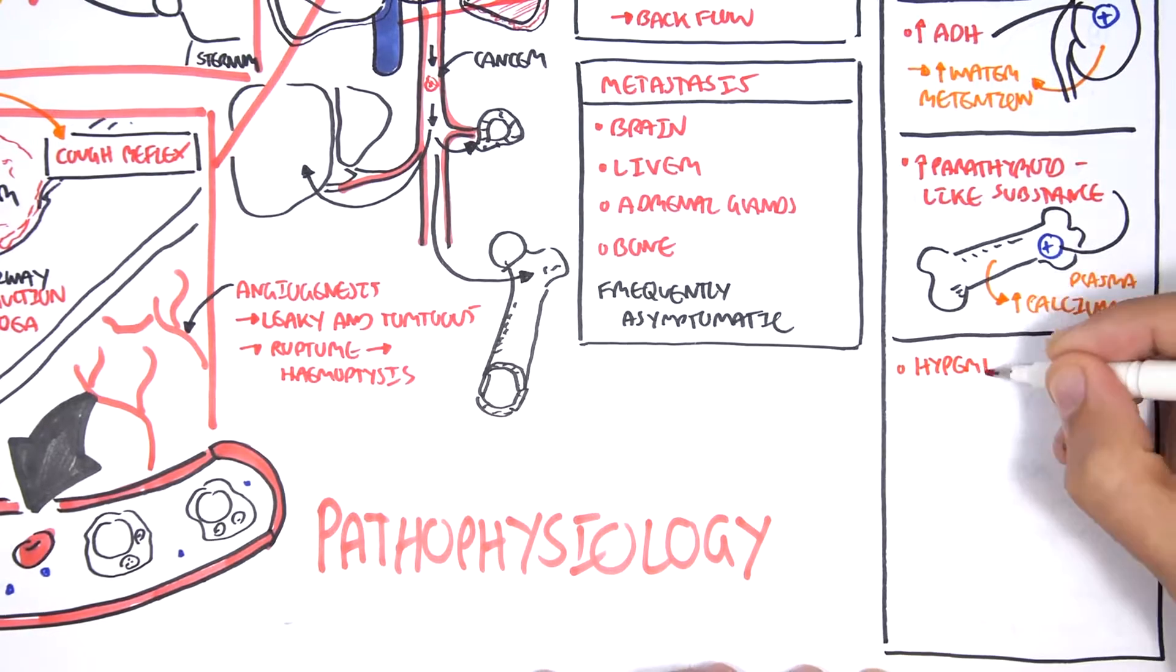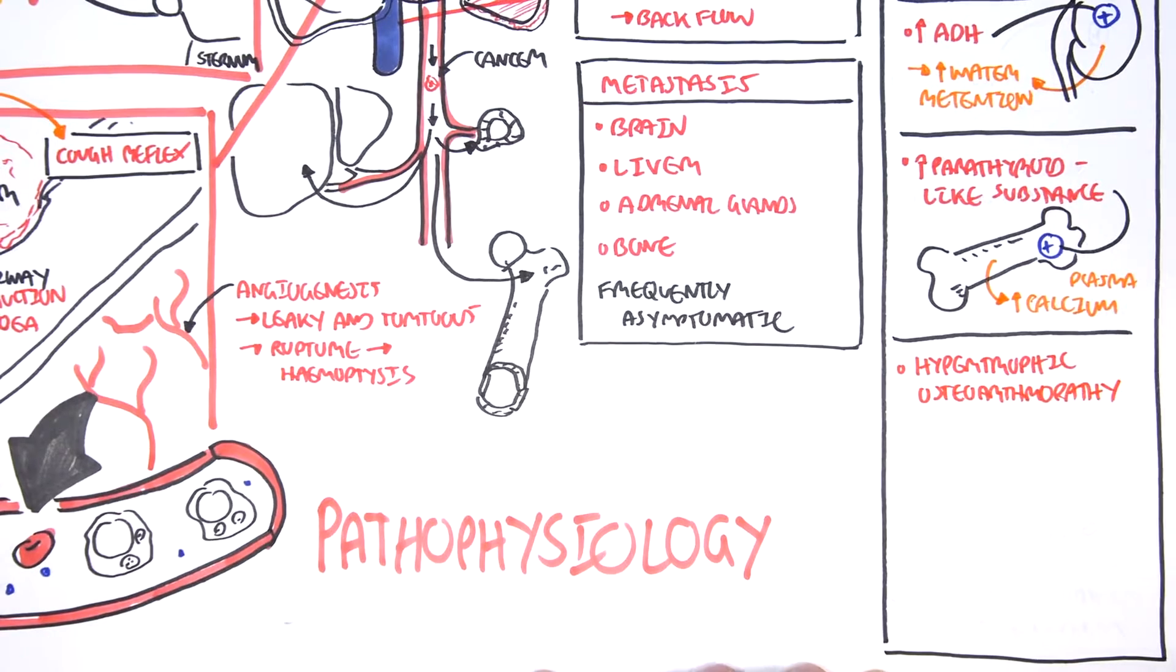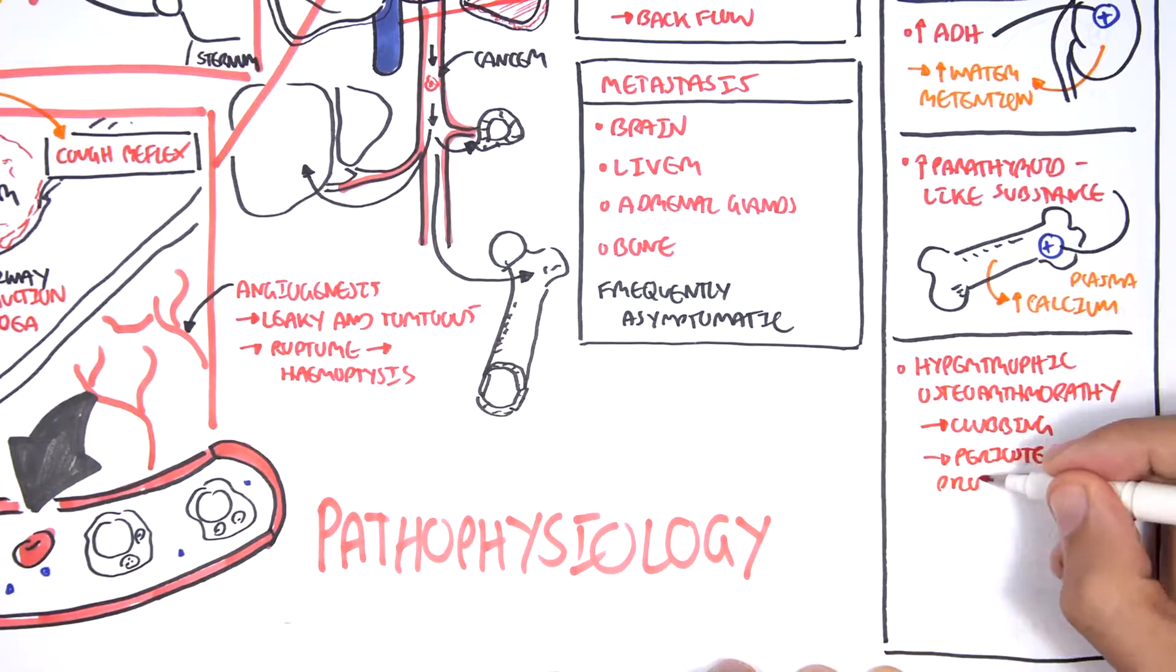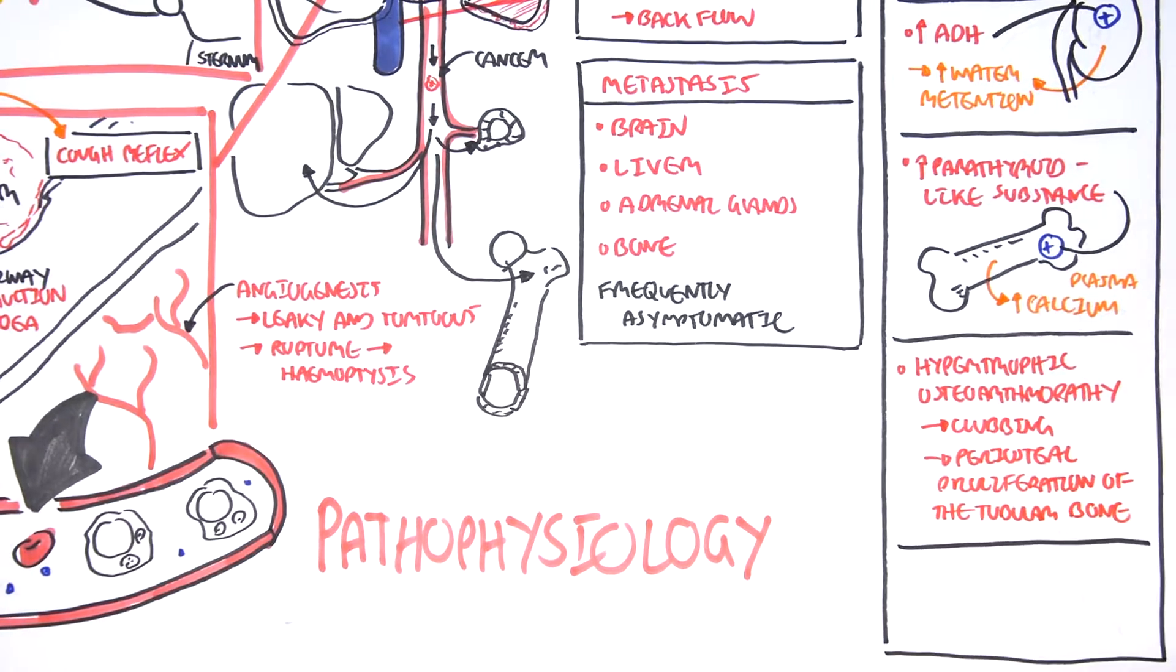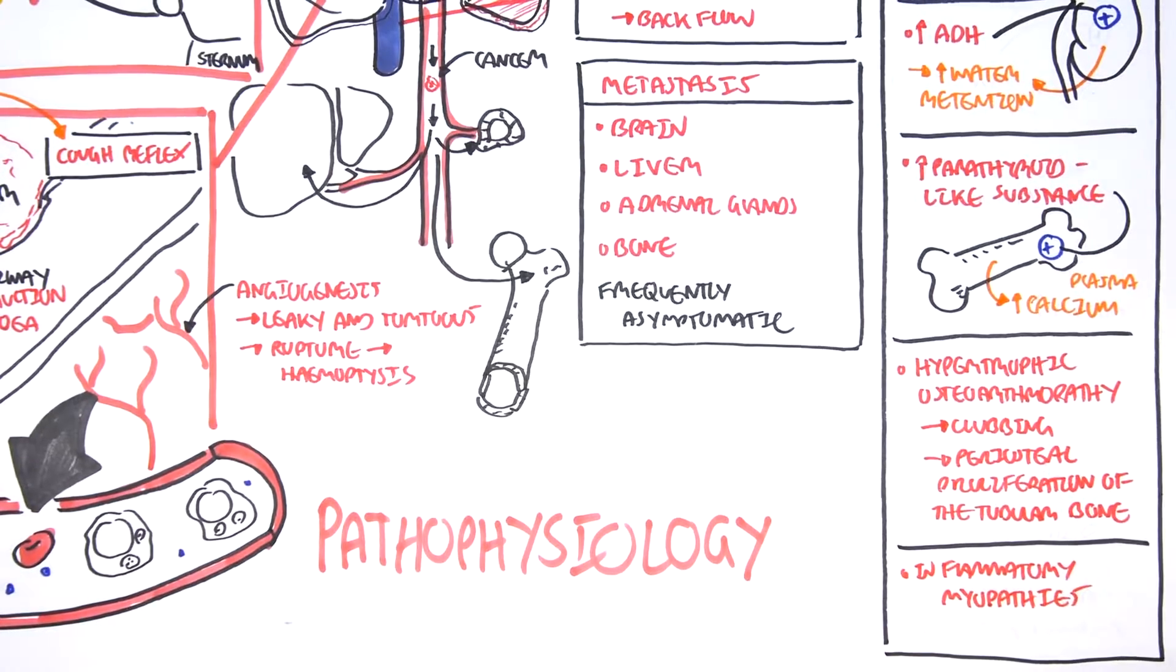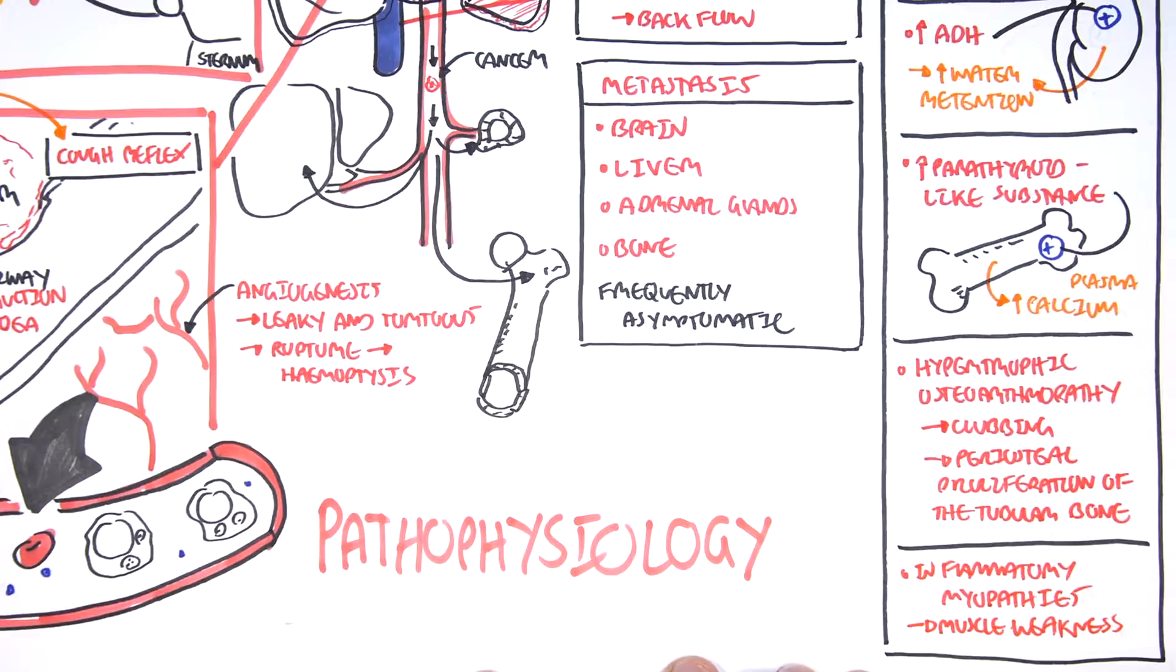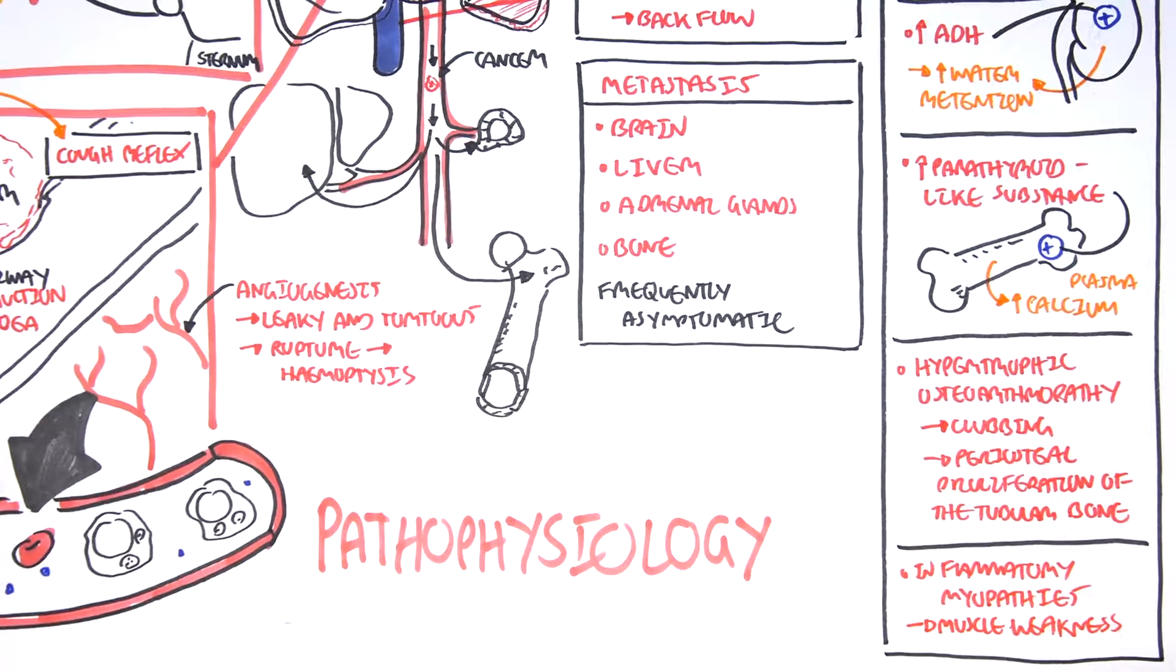Paraneoplastic syndrome also includes hyperpulmonary osteoarthropathy, leading to clubbing and periosteal proliferation of the tubular bone. And lastly, inflammatory myopathies can result from lung cancer, which leads to the muscle weakness. And so that is why we see signs of finger weakness upon examination of patients with lung cancer.